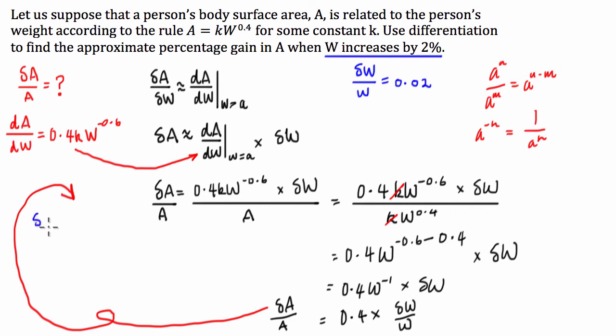So we can then say that delta A over A is going to be equal to 0.4 times, now instead of writing delta W over W, we know what that is. We've got it here. So this is going to be equal to 0.02. And from here, we can say that delta A over A is equal to 0.008, or 0.8% increase.